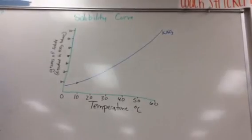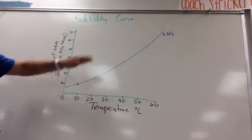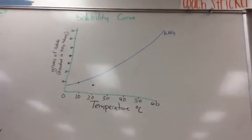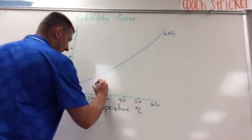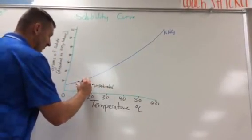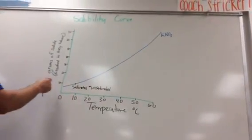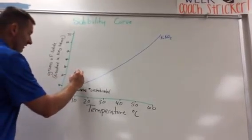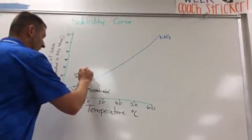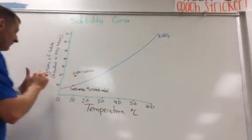If it's under the line, it's unsaturated. So if I say I have 10 grams of KNO3 at 20 degrees, then what is that? It's under the line, so it's unsaturated. So a point under the line is unsaturated. A point on the line is saturated. And a point above the line, what if I say you have 20 grams at 10 degrees? That point's above the line. That is supersaturated. So that's how you describe what you're looking at.